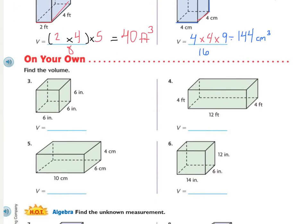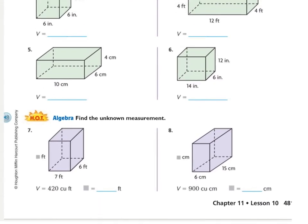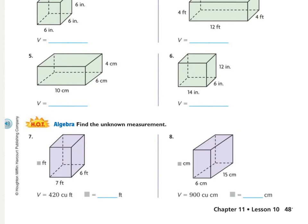Again, remember that as you're working on your own with 7 and 8, you're finding the missing dimension. So you need to kind of write out your formula, fill in the numbers that you have, work down, and then use the inverse operation to find what's missing. And the way that you undo a multiplication problem is to use division. Okay, go ahead and work on your own.